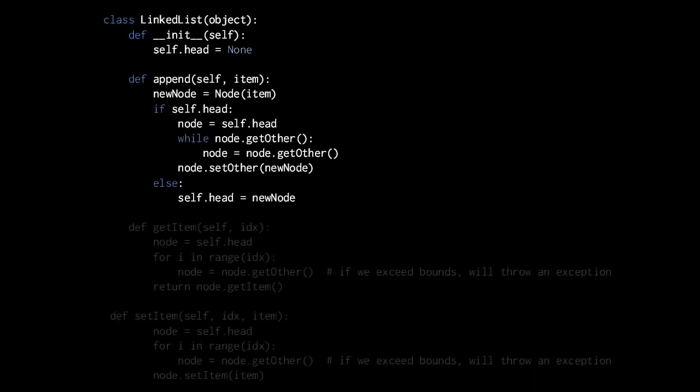For our append method, the argument is item — the value to store in the new node — and then we create from that a new node. What we do with this new node depends on whether or not there already is a head. If there isn't already a head, the condition 'if self.head' will test false because self.head will equal none, and none is considered a false value in Python. So the else clause will execute, and we simply assign the new node to self.head — now we have a list with one node.